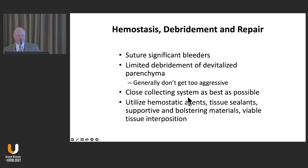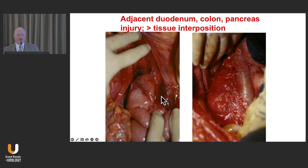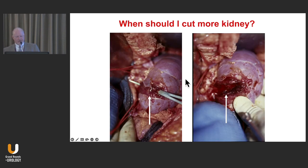Closing the collecting system as best as possible is valuable. Utilizing hemostatic agents and tissue sealants is very helpful. When you have adjacent injured viscera — for example a big duodenal injury alongside a big renal injury — do viable tissue separation and drain them separately, because pancreatic or duodenal fluid flooding your renal repair leads to poor outcomes. We've closed Gerota's fascia completely over the injured kidney, drained extraperitoneal posteriorly, and drained the duodenum anteriorly.